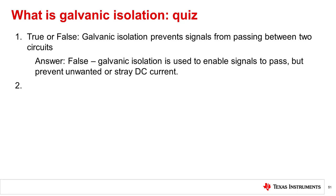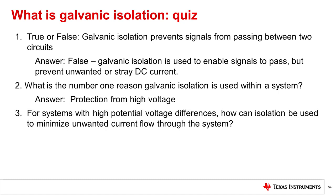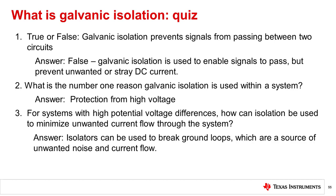Question two: What is the number one reason galvanic isolation is used within a system? Safety and protection from high voltages. Question three: For systems with high potential voltage differences, how can isolation be used to minimize unwanted current flow through the system? Isolators can be used to break ground loops, which are a source of unwanted noise and current flow.